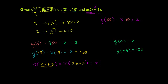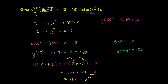So 2x plus 3 — whatever we input, this function says multiply it by 8 and add 2. We're inputting 2x plus 3, so multiply it by 8 and then add 2. This is going to be equal to — we just distribute the 8 and get 16x plus 24, and you still have this plus 2. So this is going to be equal to 16x plus 26. We have g of 2x plus 3 is equal to 16x plus 26.